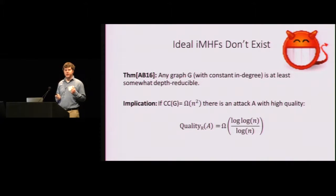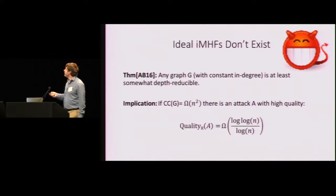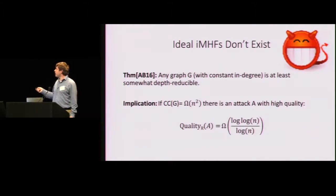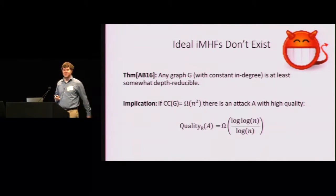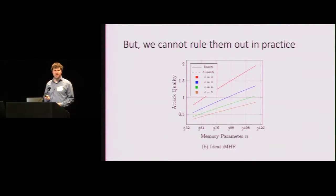All right. Well, so this doesn't just apply to Argon2i. In fact, we have a general theorem stating that ideal IMHFs don't exist. And simplifying a little bit, we prove that any graph G with constant in-degree is at least somewhat depth-reducible. So in particular, that implies that there's always an attack with quality. Oh, sorry. This should be log n over log log n, not the other way around. I'll fix that in my slides before I send it to you. But there's always an attack with quality roughly log n. All right. So this is true in theory, but we actually can't rule out ideal IMHFs in practice. So if you look at the memory parameters for which these attacks start to become practical, they start to be practical somewhere around 2 to the 51, which is orders of magnitude above any real memory parameter that we would select.